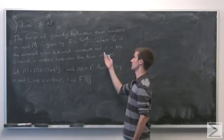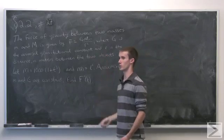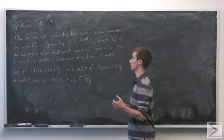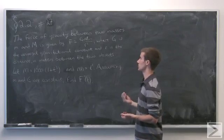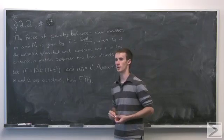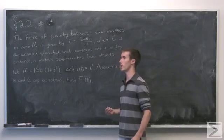Given by G times capital M, small m, over r squared, where m's are the masses respectively, G is the universal gravitational constant, and r is the distance between the two masses.